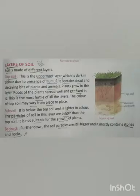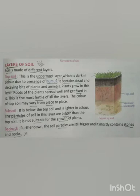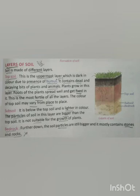Let's do its reading now. Layers of soil — soil is made of different layers. Top soil: this is the uppermost layer, which is dark in color due to the presence of humus. It contains dead and decaying bits of plants and animals. Plants grow in this layer; roots of the plants spread well and get fixed in it. This is the most fertile of all the layers. The color of top soil may vary from place to place.